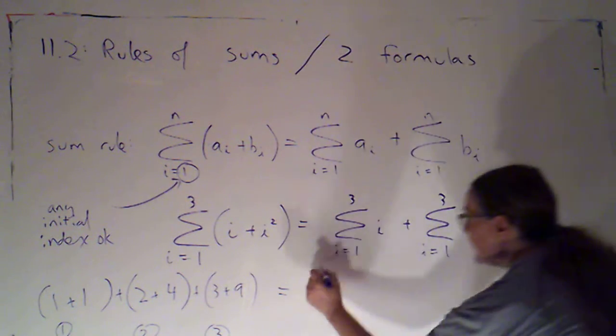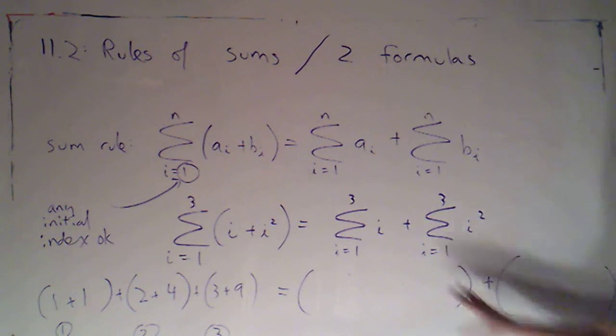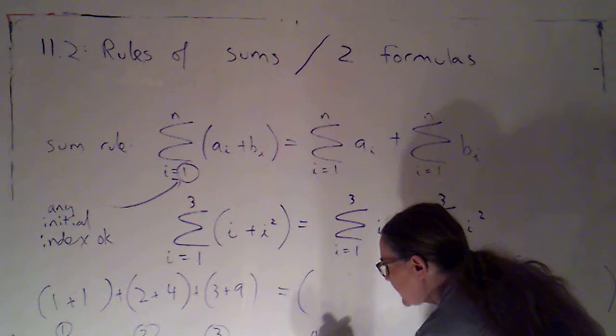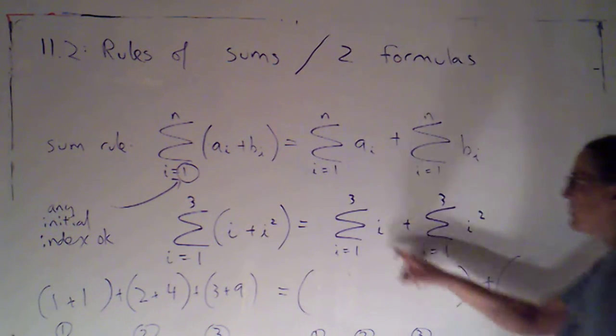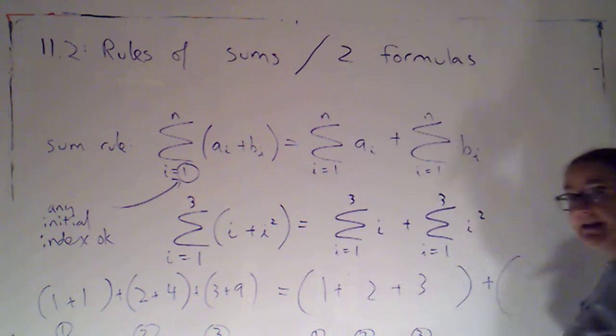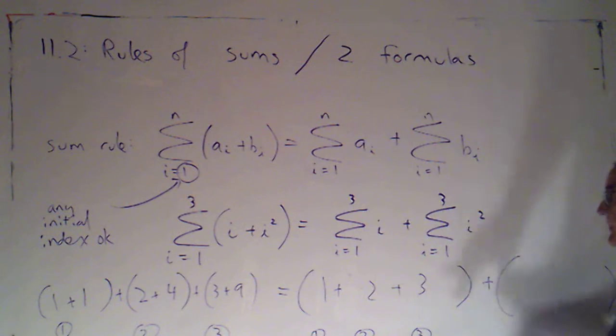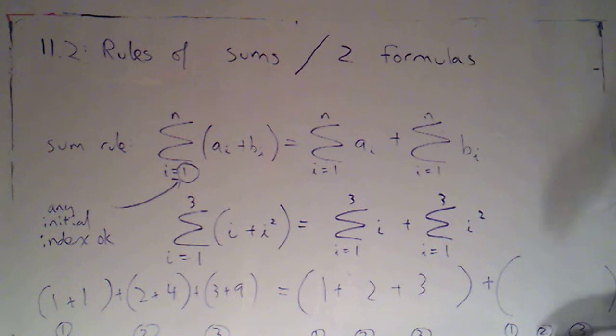So this is what the left hand side looks like. Now, on the right hand side, I'm adding together two sums. So for this sum, my index goes from 1 to 3. We're going to have 1 plus 2 plus 3. The term here is our index. For this sum, the index goes from 1 to 3. When the index is 1, 1 squared is 1. Plus, when the index is 2, 2 squared is 4. Plus, when the index is 3, 3 squared is 9.